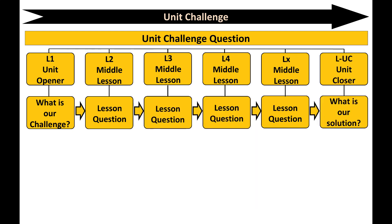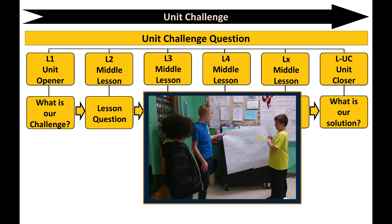The Unit Closer, the final lesson, is built around a culminating experience in which students, often working in teams, communicate to a specific audience how they would address the problem they identified in the Unit Challenge scenario, using their student products as evidence. During the culminating experience, students respectfully evaluate each other's reasoning and arguments. In addition to resolving the Unit Challenge, students revisit the Unit Challenge question through their Unit Bubble Map to reflect on what they have learned throughout the unit.